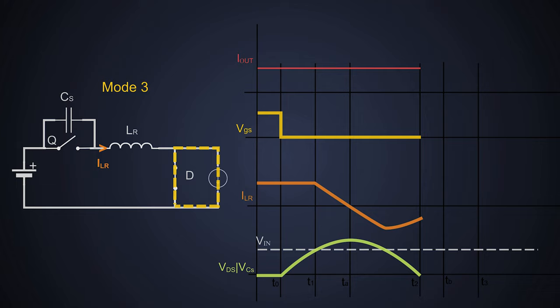Now in Mode 3, although the capacitor is fully discharged till time T2, there is a possibility that the inductor still had some energy left in it. Now the body diode of the MOSFET comes into picture. So the remaining inductor current flows to this body diode.